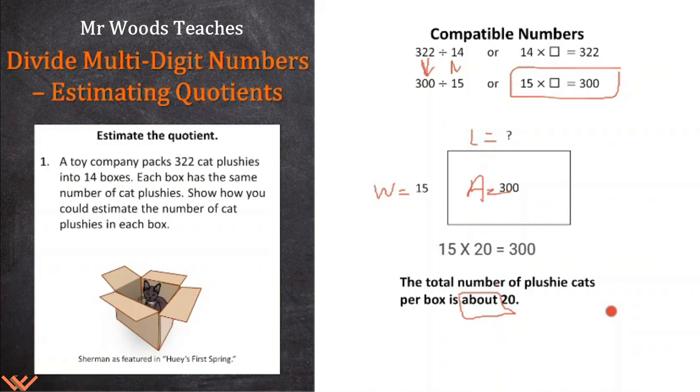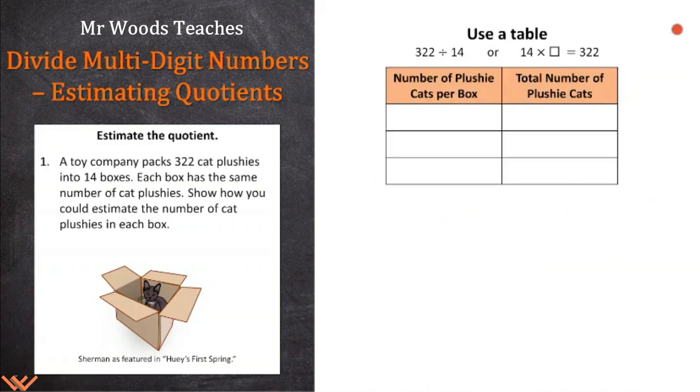Another thing that we can do is we can use a table. We can say 322 divided by 14, or 14 times something is equal to 322. Well, let's take a look at this. Let's go, let's start out here. Number of plushy cats per box, let's put it in here as 10. And if we multiply 14 times 10, that equals 140. All I'm doing is just adding that 0 to the end. Let's take 20. And I know that if it's 14 times 10 is 140, I just double that. So I can say 14 times 20. Or if I know 2 times 14, which is 28, and I have that 0 to it, let's say 280.